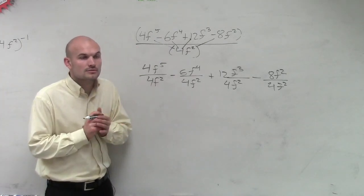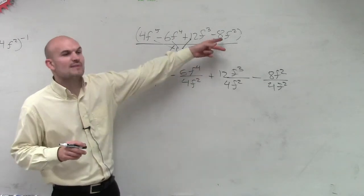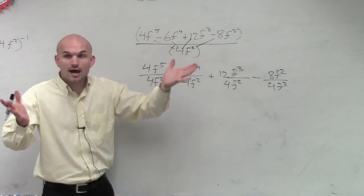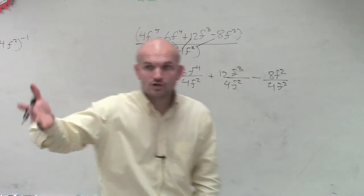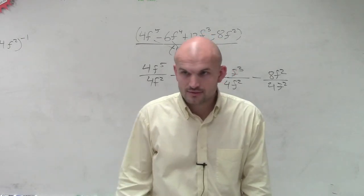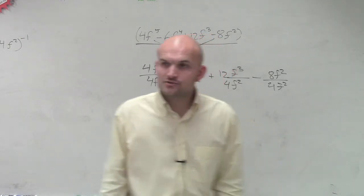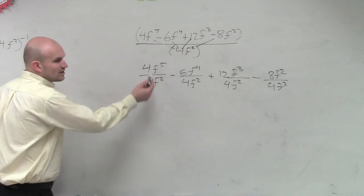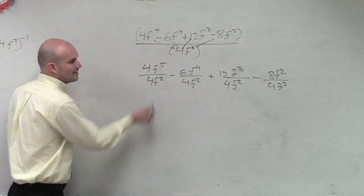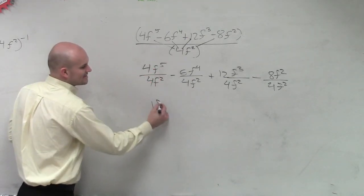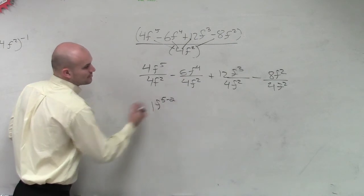It's the minus 8, so yeah, you're just going to leave it with that. Now, we practiced the rules of exponents, right? So now, we just need to apply those rules. 4 divided by 4 is 1. f to the fifth minus f squared is f to the 5 minus 2, right?